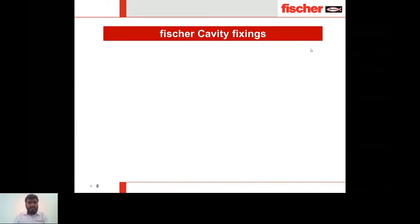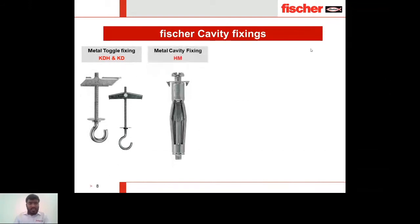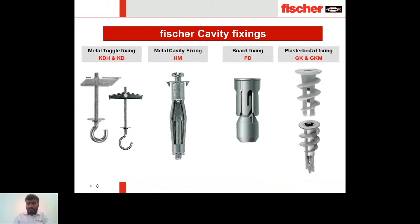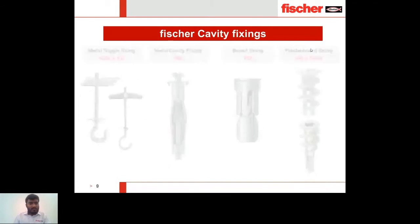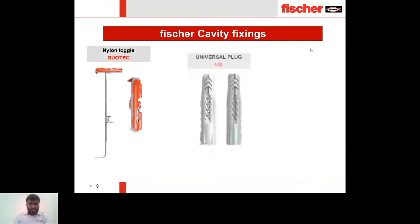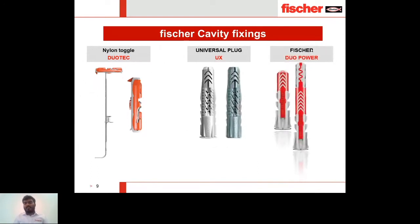Today we are going to discuss seven different anchors: first, metal toggle fixing KD and KDH (two variants); second, metal cavity fixing HM; third, board fixing PD; fourth, plasterboard fixing GK and GKM; fifth, nylon toggle DuoTech; sixth, universal plug UX; and seventh, Fischer DuoPower.